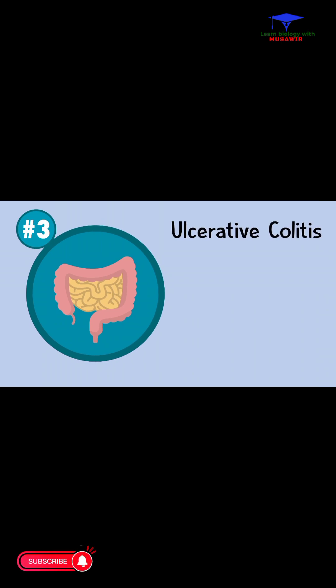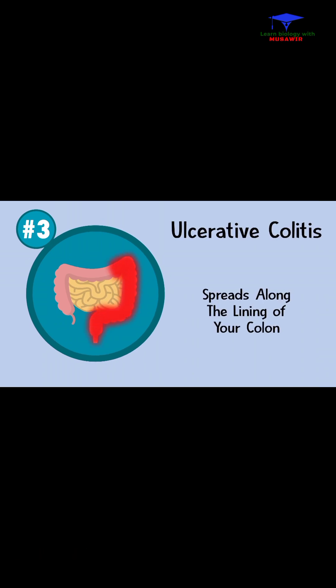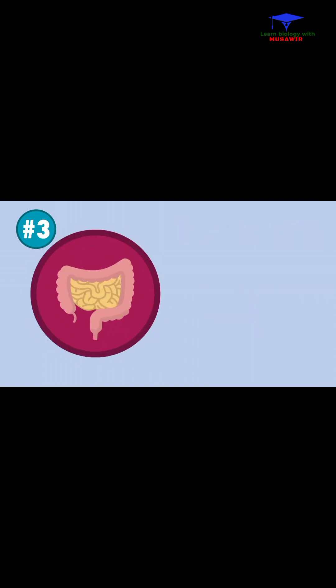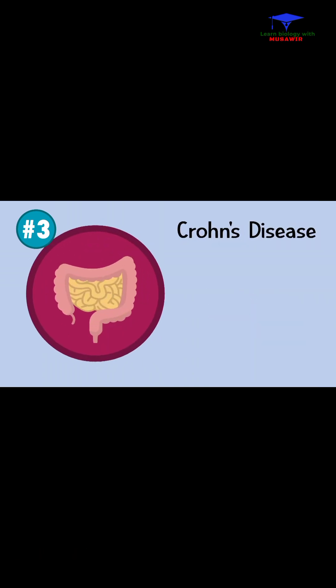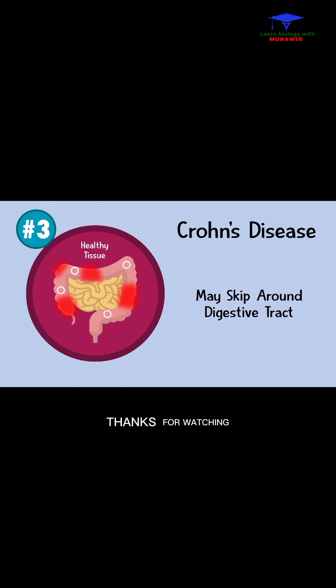Ulcerative colitis usually spreads along the lining of your colon. But with Crohn's disease, the inflammation may skip around, leaving patches of healthy tissue in between areas with problems.